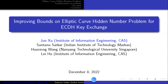The final talk of this session is 'Improving Bounds on Elliptic Curve Hidden Number Problem for ECDH P-Exchange' by Junsu, Santa Nusaka, Huasheng Wang, and Lei Hu, given by Junsu. I'm from the Institute of Information Engineering, Chinese Academy of Sciences. The title is Improving Bounds on the Elliptic Curve Hidden Number Problem, ECHMP, for ECDH P-Exchange.